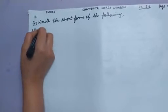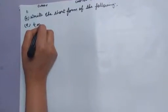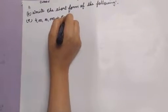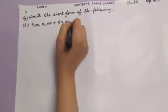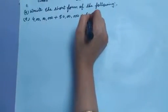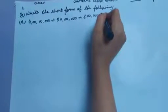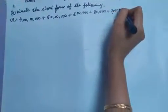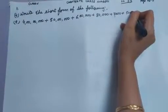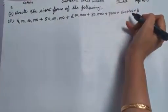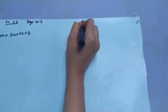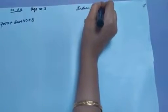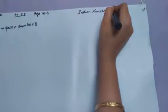Question number 8. The question is given in expanded form. To write in short form, first of all we have to make the number system — Indian number system.